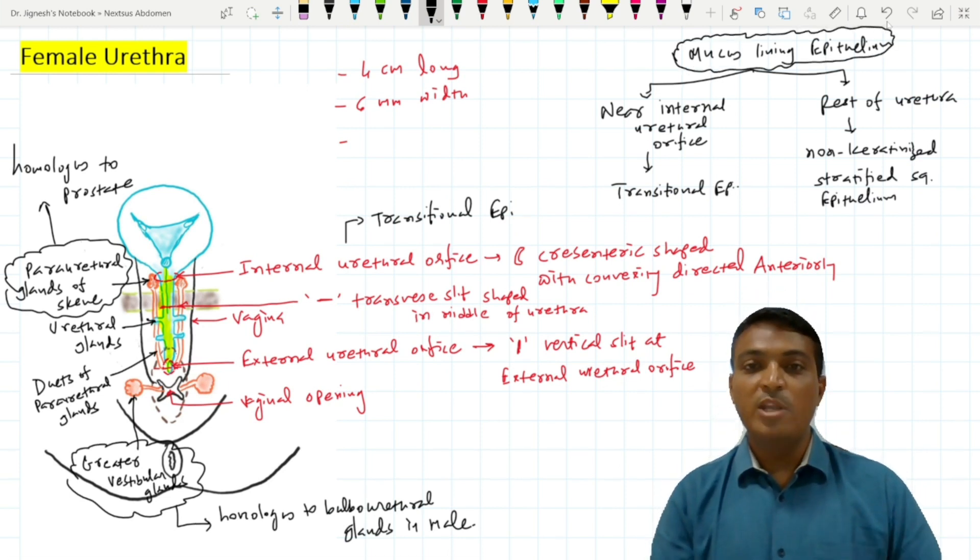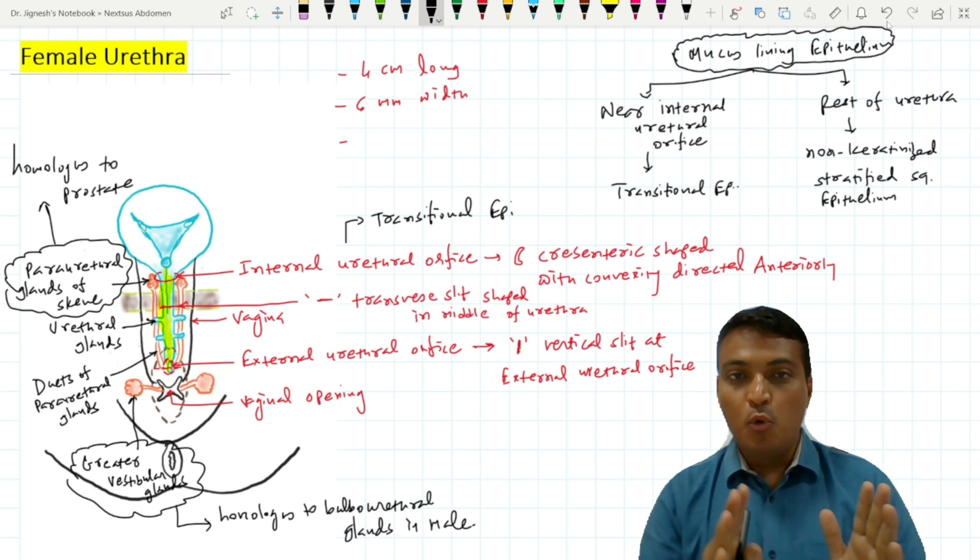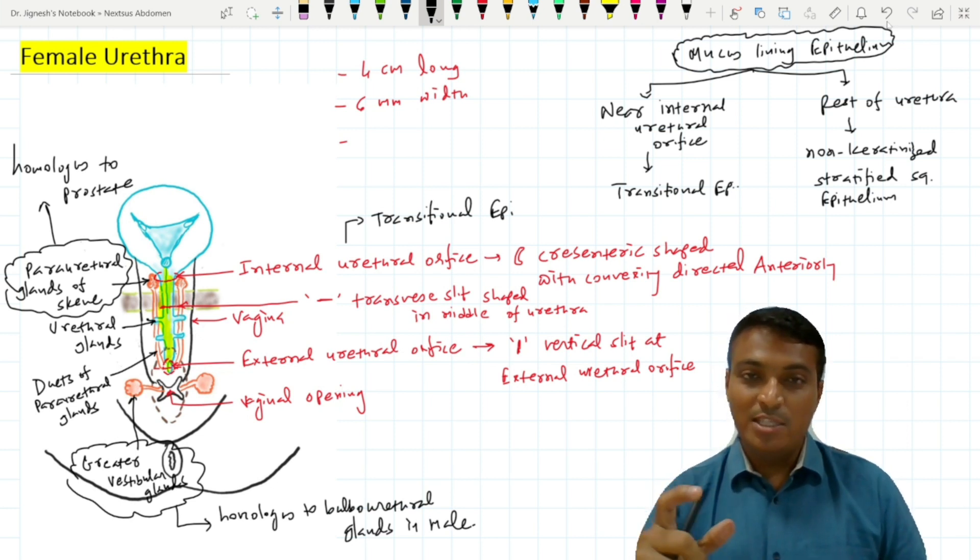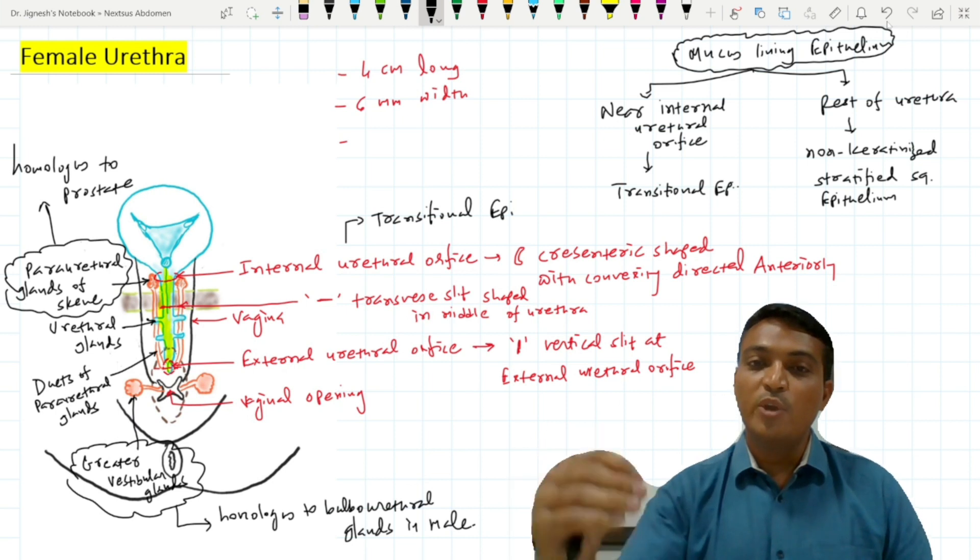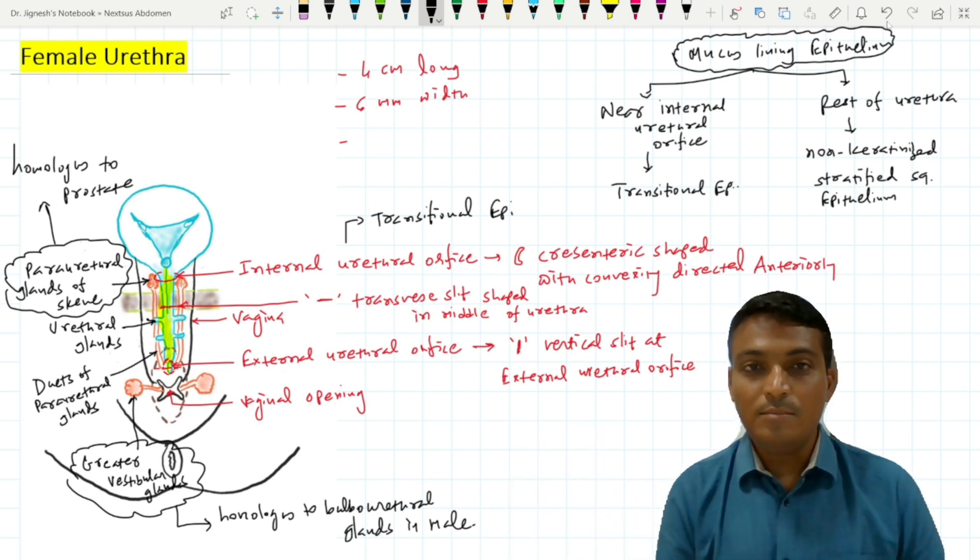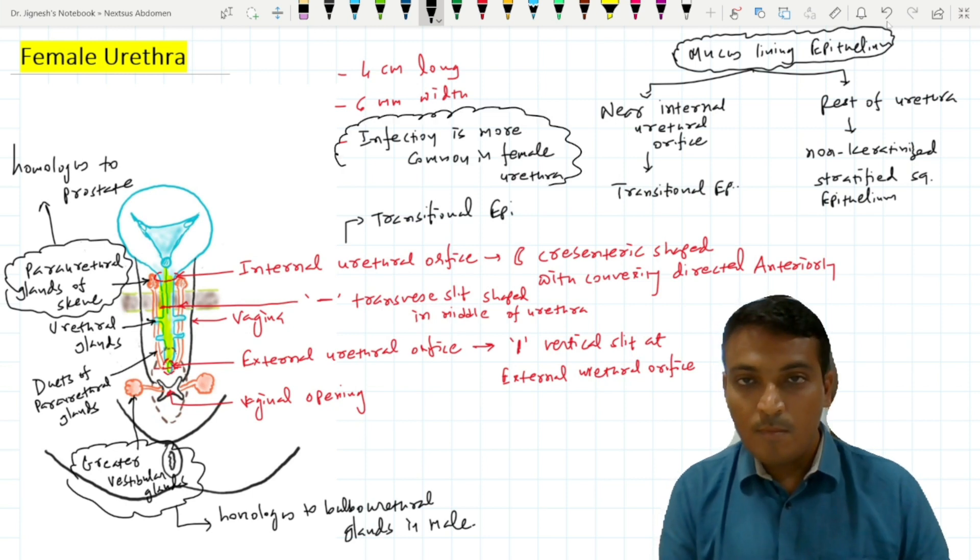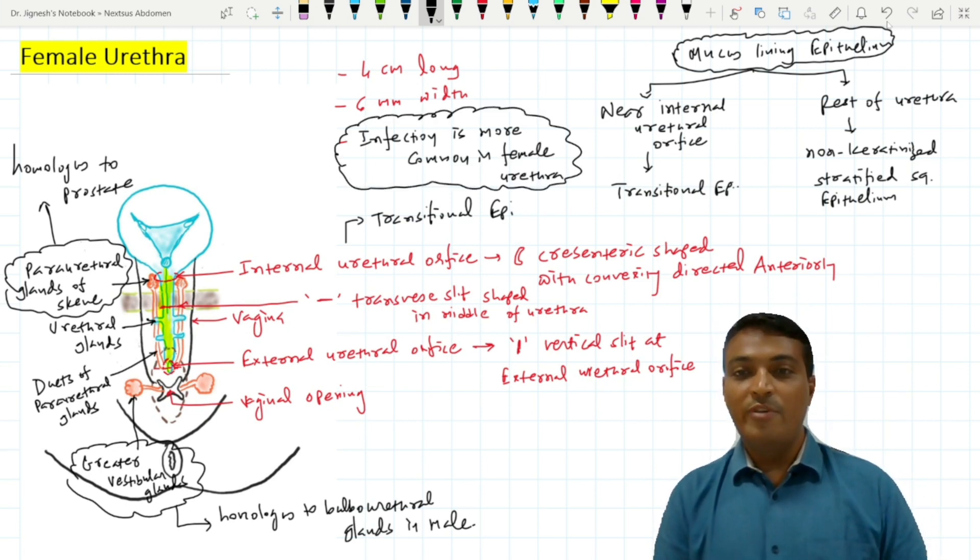The important clinical point to understand is that infection of the female urethra is more common than that of the male because of the short course of the female urethra. Bacteria can easily travel to the urinary bladder through this small female urethra. That's all about the female urethra. Hope you understand well. Thanks for watching.